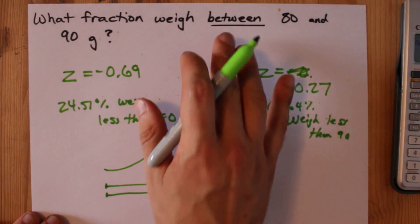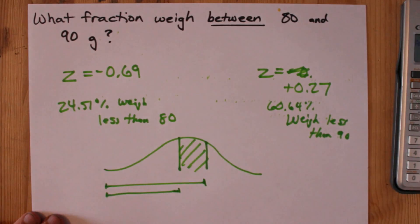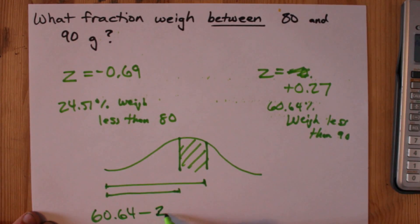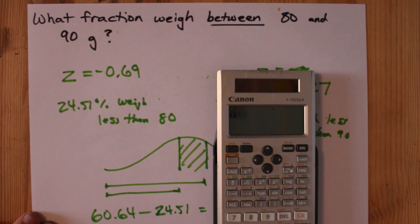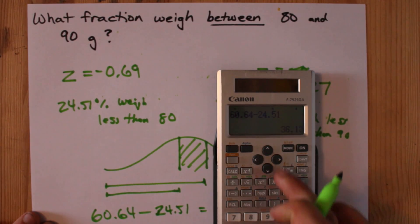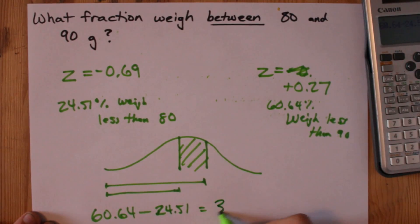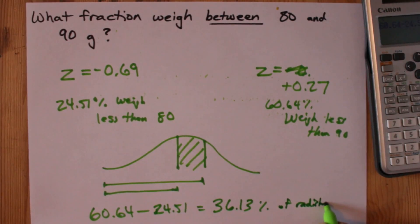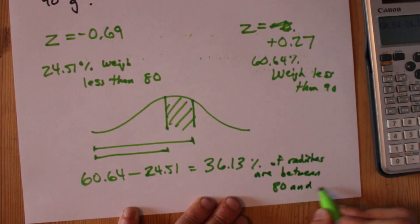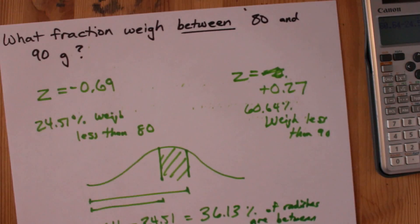If you're asked for a between, do it for both thresholds and subtract the difference. 60.64 minus 24.51 gives me 36.13%. 36.13% of radishes are between 80 and 90 grams.